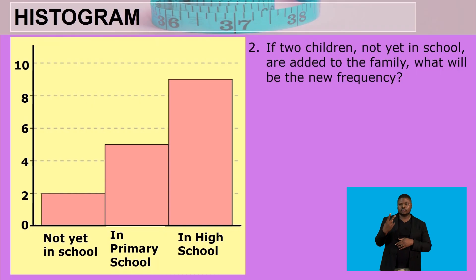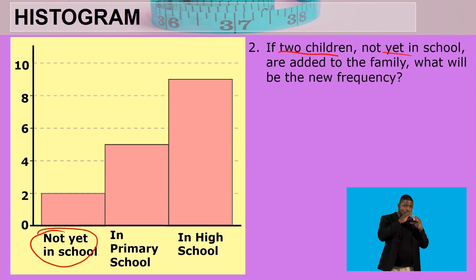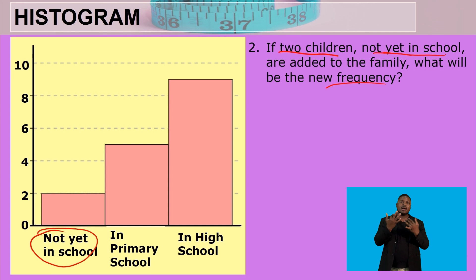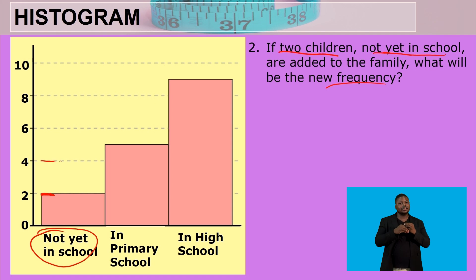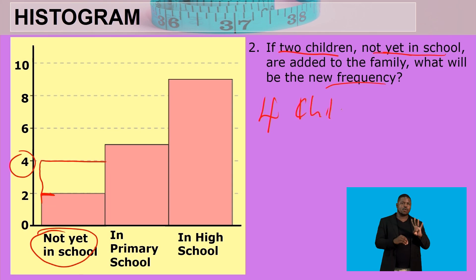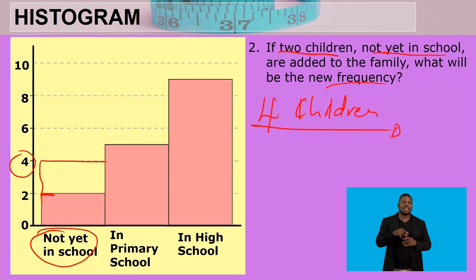Question two asks: if two children not yet in school are added to the family, what will be the new frequency for that category? Currently there are 2 children not yet in school. Adding 2 more gives a total of 4. So the new frequency becomes 4 — there will be 4 children in the family not yet in school.